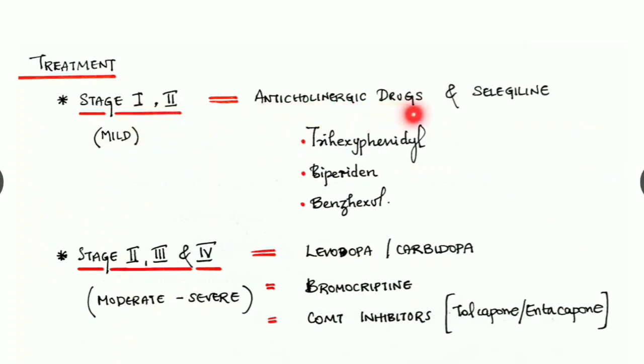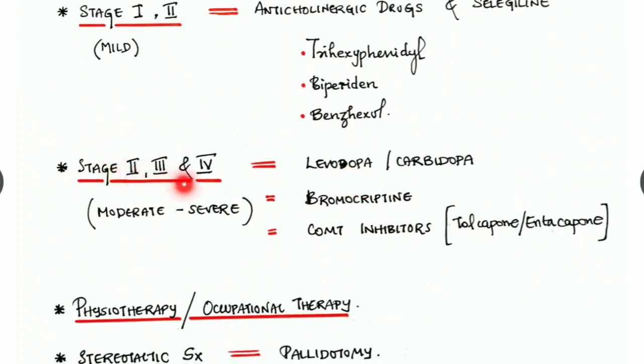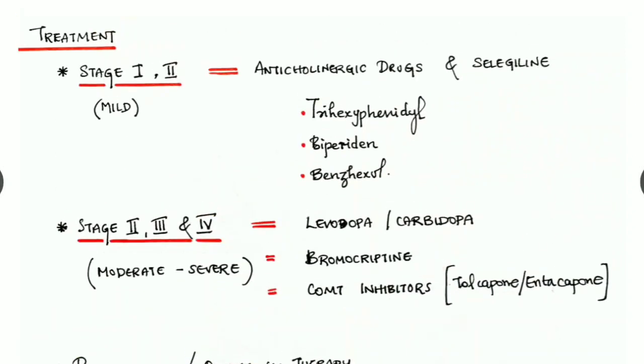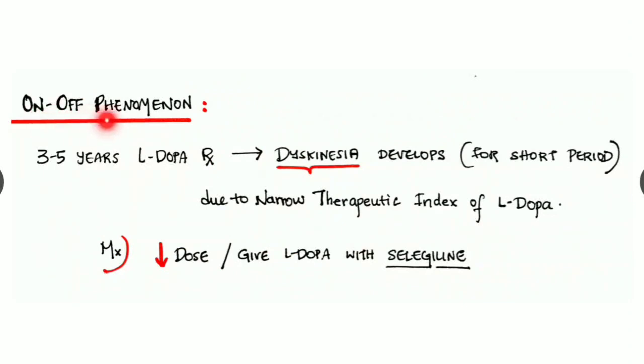Let's see the treatment of Parkinsonism. Stage one and two, which is a mild type, can be treated with anticholinergic drugs and selegiline. Examples of anticholinergic drugs are trihexyphenidyl, biperiden, and benzhexol. Stage two, three, and four with moderate to severe disease type can be treated with levodopa and carbidopa in combination with bromocriptine, COMT inhibitors. Examples: tolcapone and entacapone. We can go for physiotherapy or occupational therapy. Finally, if the disease is severe or affecting a very young patient, we can go for stereotactic surgery where pallidotomy is done.